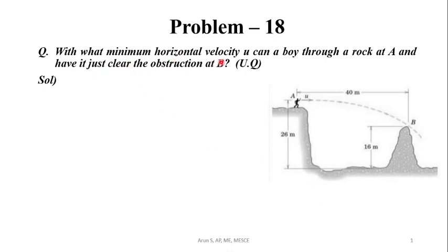With what minimum horizontal velocity can a boy throw a rock at A and have it just clear the obstruction at B? Point A is here, this is point B.